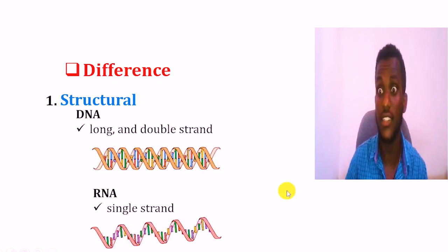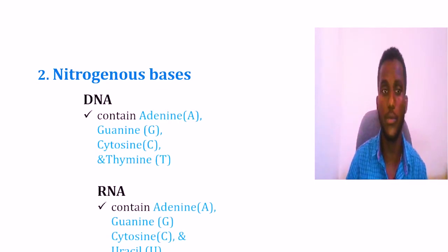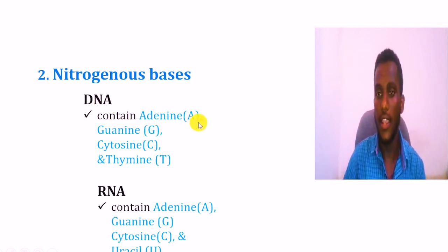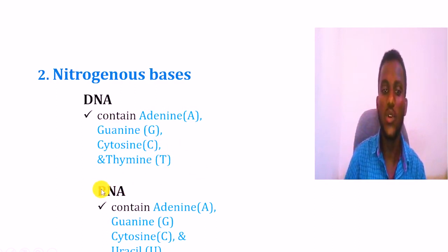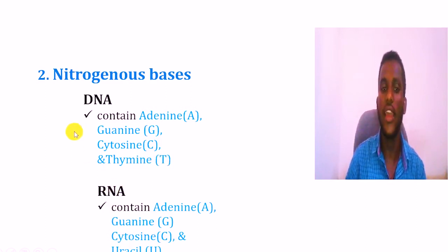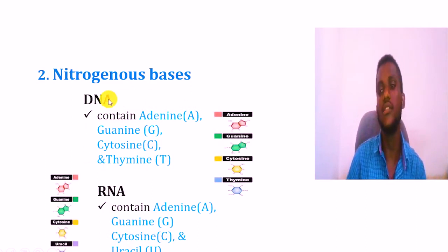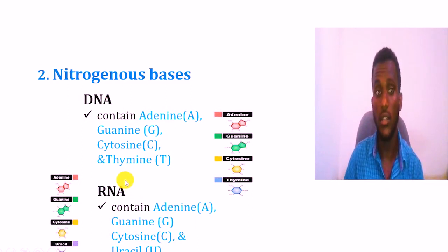Another difference is based on the nature of the nitrogenous bases. DNA contains adenine (A), guanine, cytosine, and thymine. But in the case of RNA, it contains adenine, guanine, and cytosine, but uracil is found only in RNA, while thymine is found only in DNA.